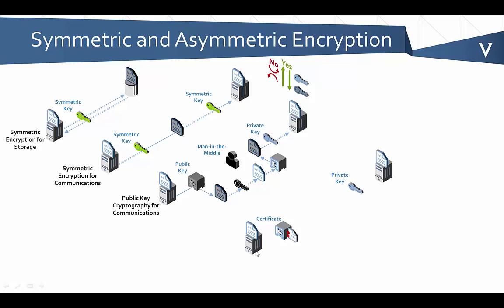Now when this sender wants to send data securely, they receive this certificate first. They look and say, this is the name of the party on the right, so I know this is the correct party. Now I'm going to use the public key — this number within here — to securely send data over to that other party. Basically, this is using certificates for encrypted communications between parties.